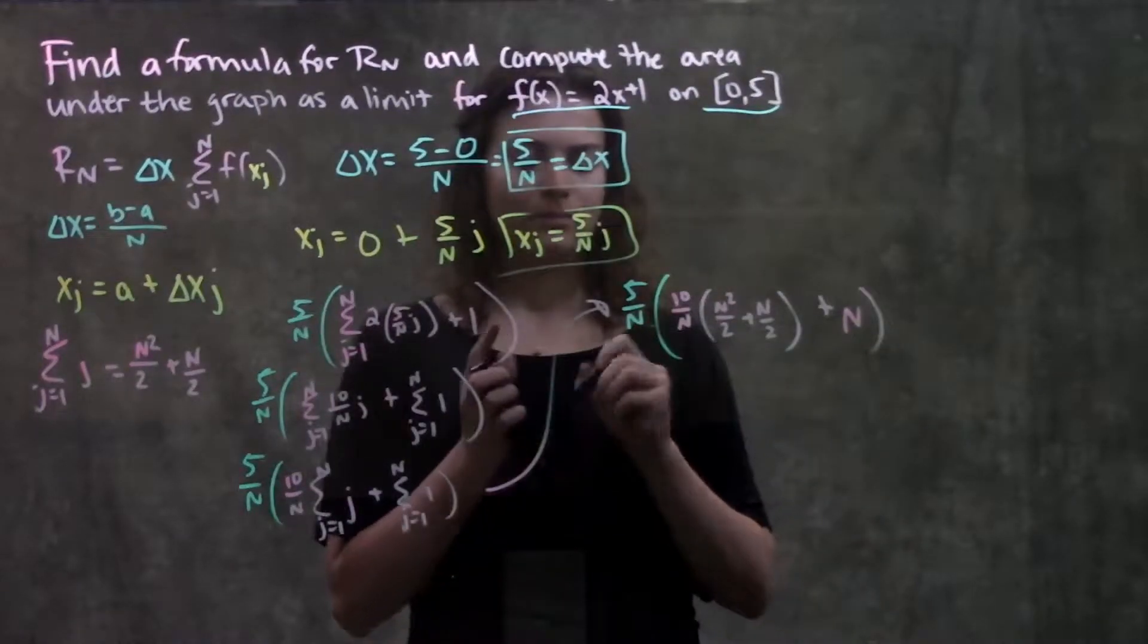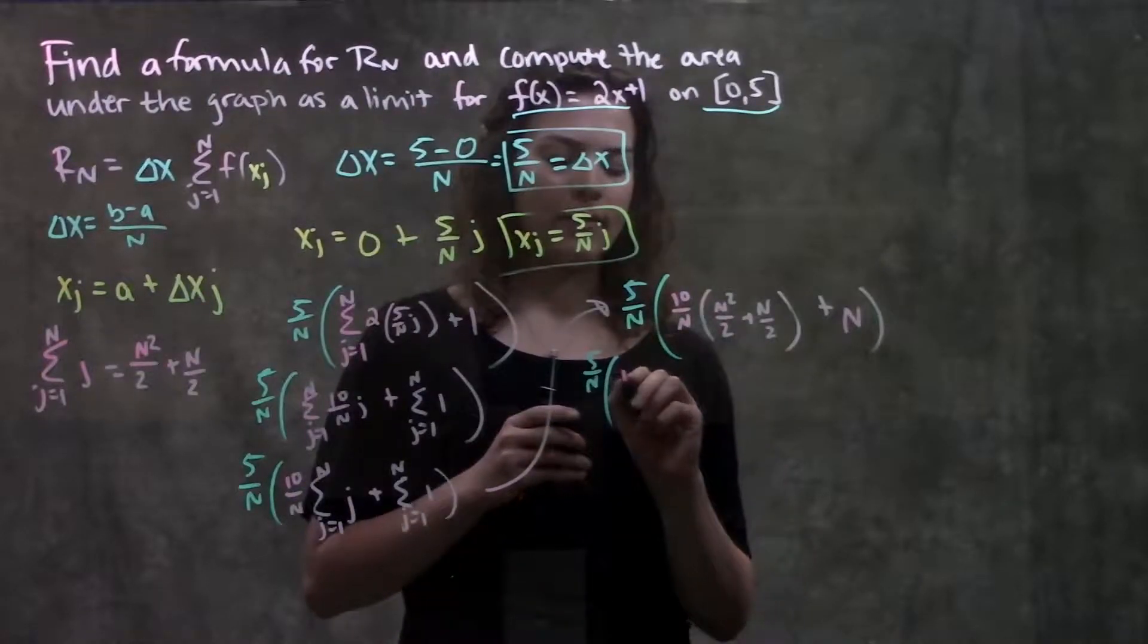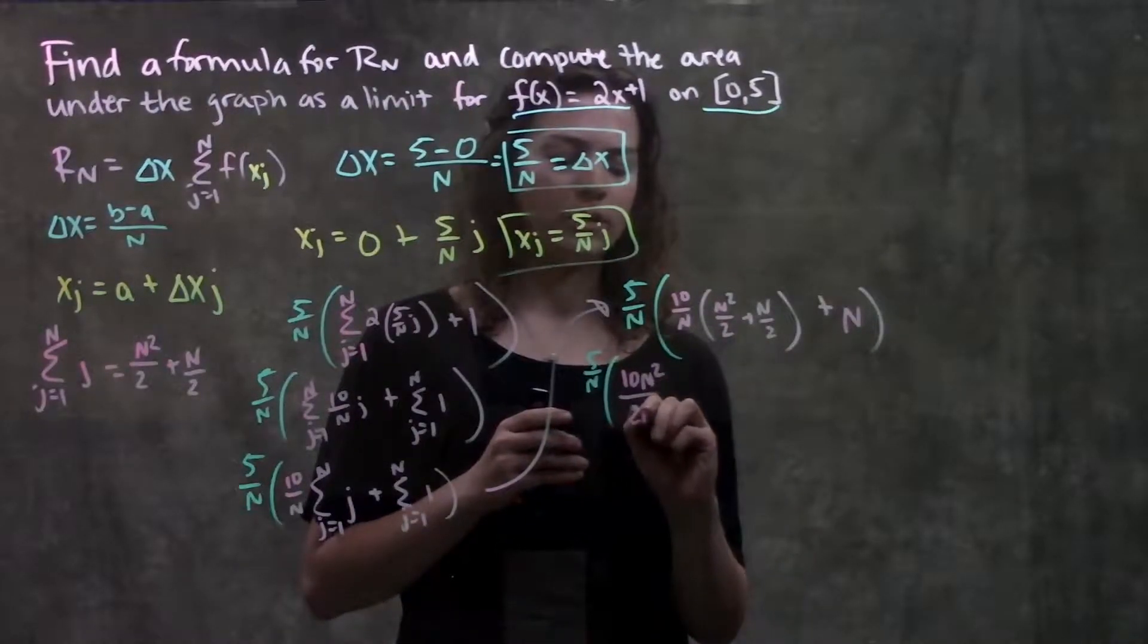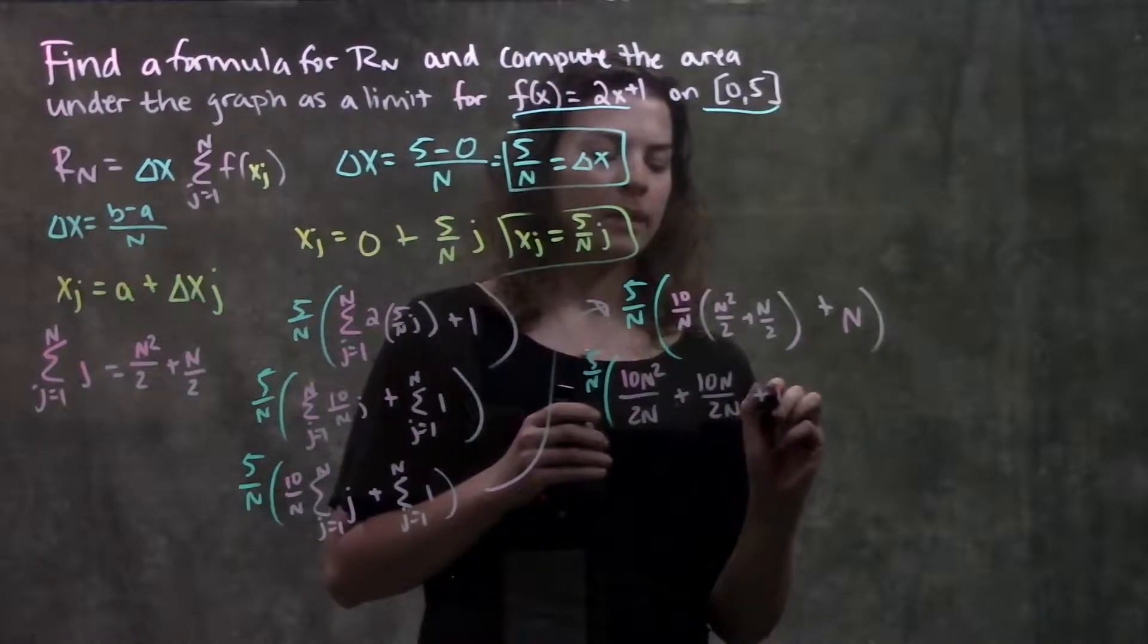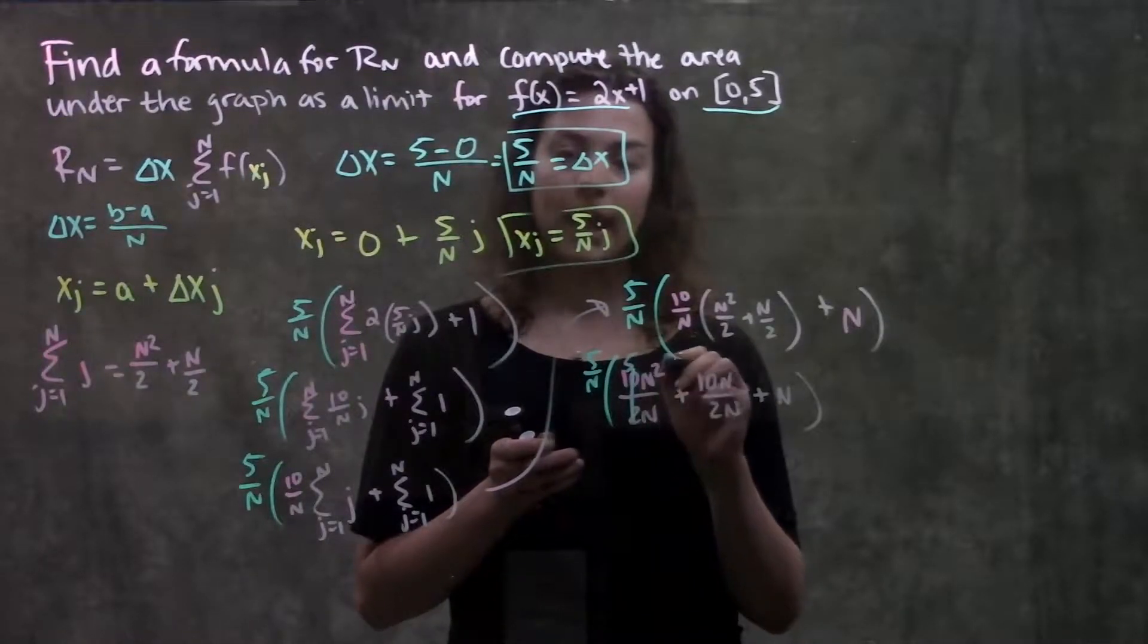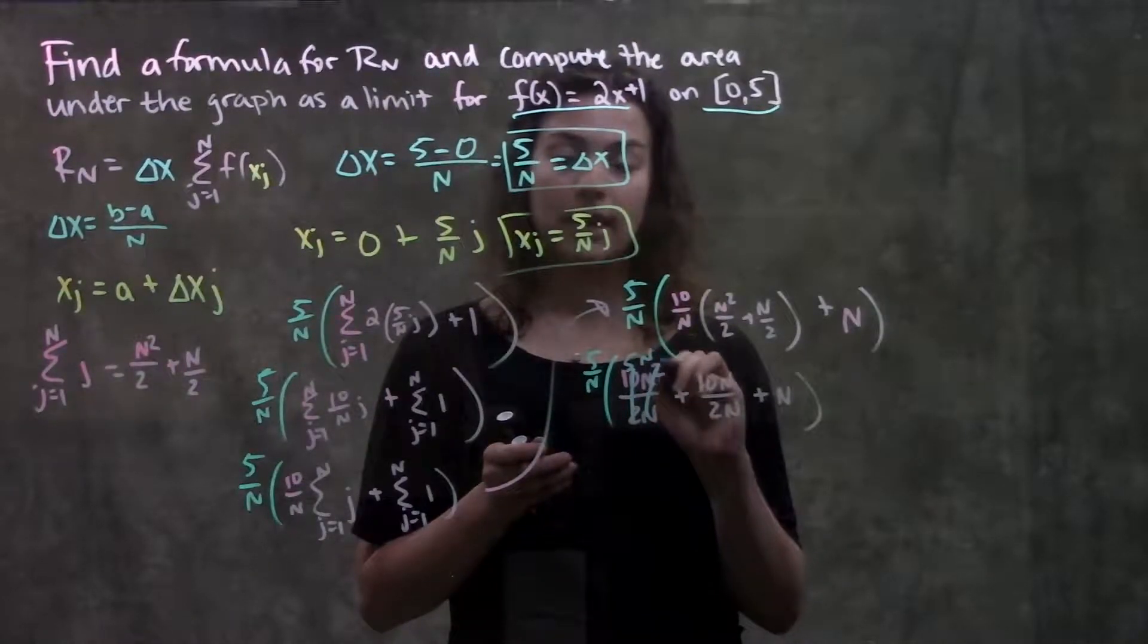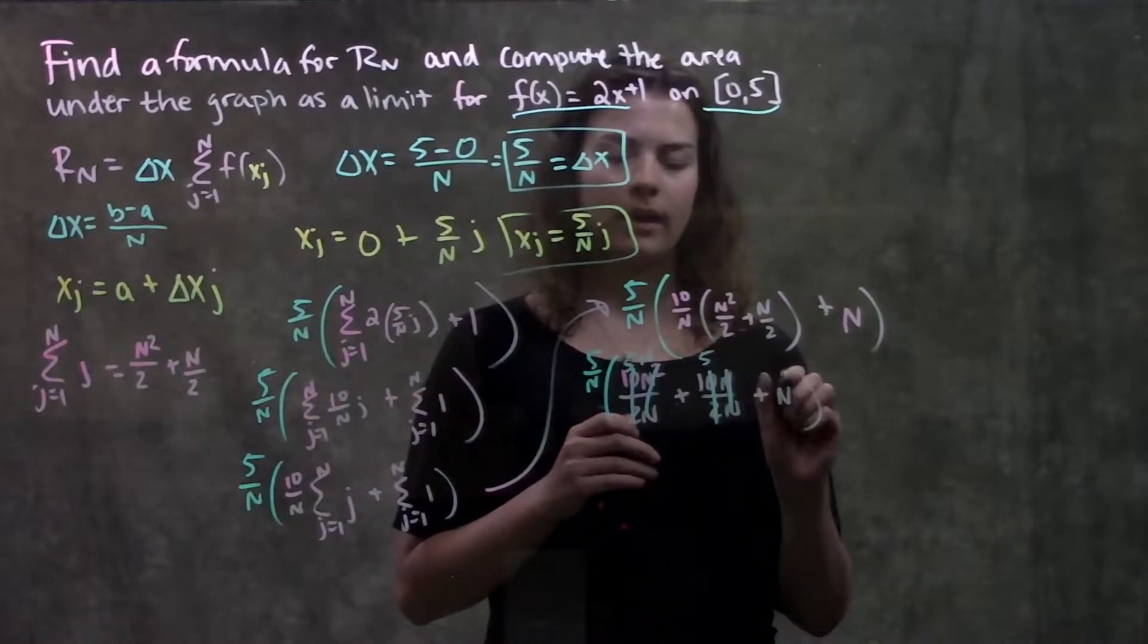And, multiplying all this out, I have 5 over n times, when I multiply this, I have 10n squared over 2n, plus 10n over 2n, plus n. Simplifying things a little bit, 10 over 2 leaves me with 5. n squared over n leaves me with n. 10 over 2 is 5, the n's cancel over here, and I just have n.